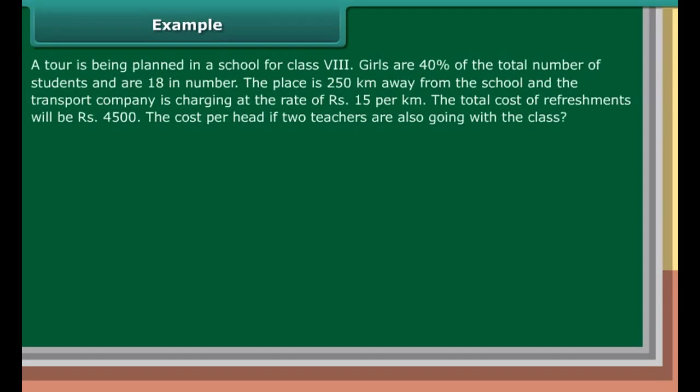Example: A tour is being planned in a school for class 8. Girls are 40% of the total number of students and are 18 in number. The place is 250 km away from the school and the transport company is charging at the rate of rupees 15 per kilometer. The total cost of refreshments will be rupees 4,500. Find the cost per head if two teachers are also going with the class.